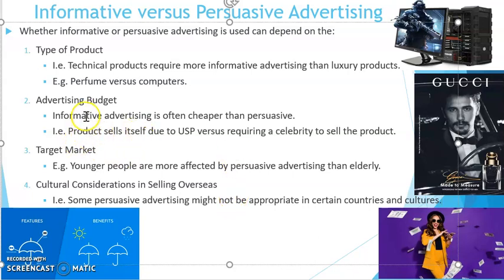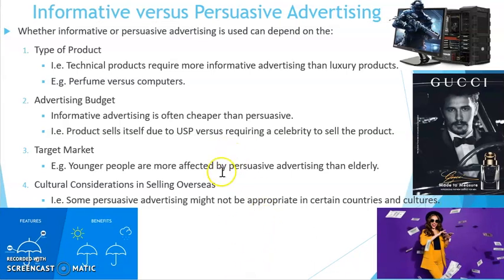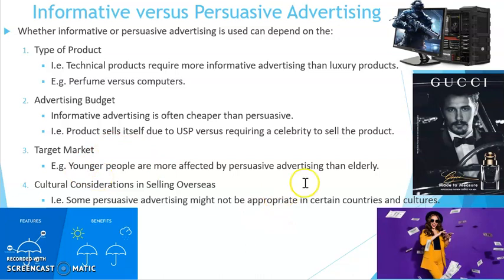With informative advertising, the unique selling point of a product can actually sell the product for you. If you just inform customers — here's how good our product is, this is what it does, this is exactly how it's going to solve your need or want — that alone can generate the sale, as opposed to going through a complex or expensive process of trying to generate an emotional response. As for target market: younger people are more affected by persuasive advertising than the elderly. This refers to the wisdom of older consumers versus perhaps the susceptibility of youth towards persuasive advertising.